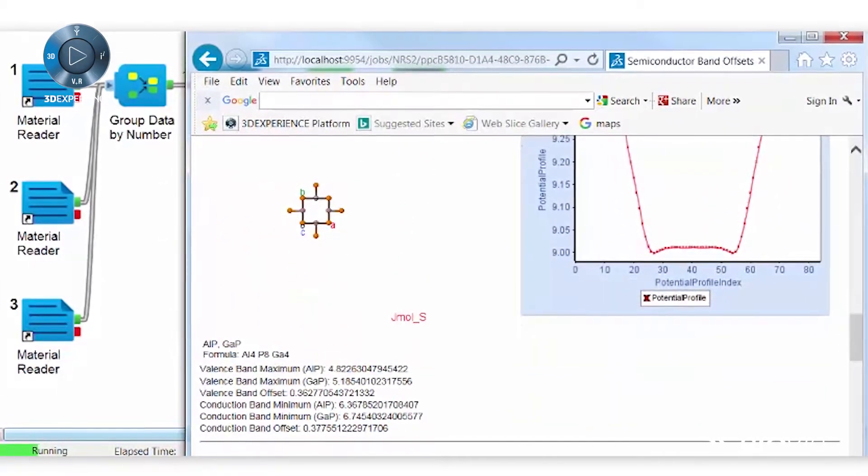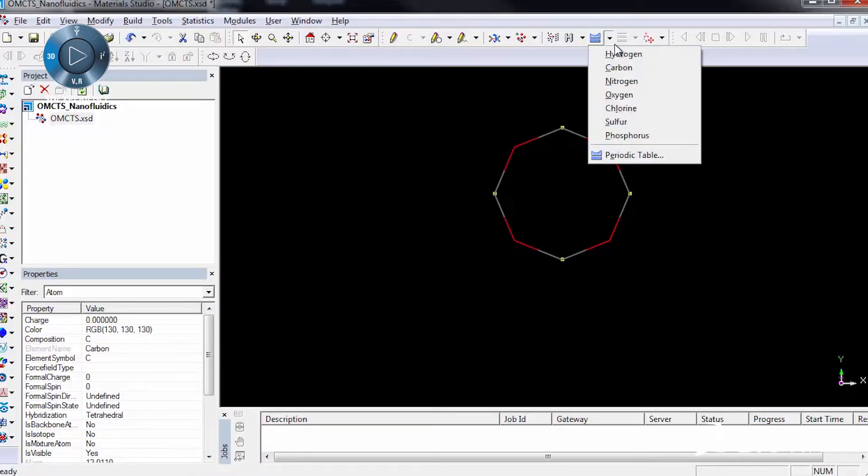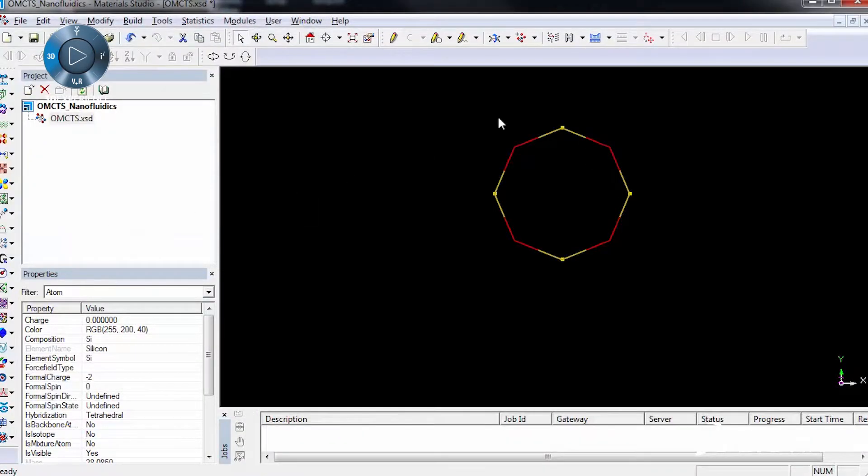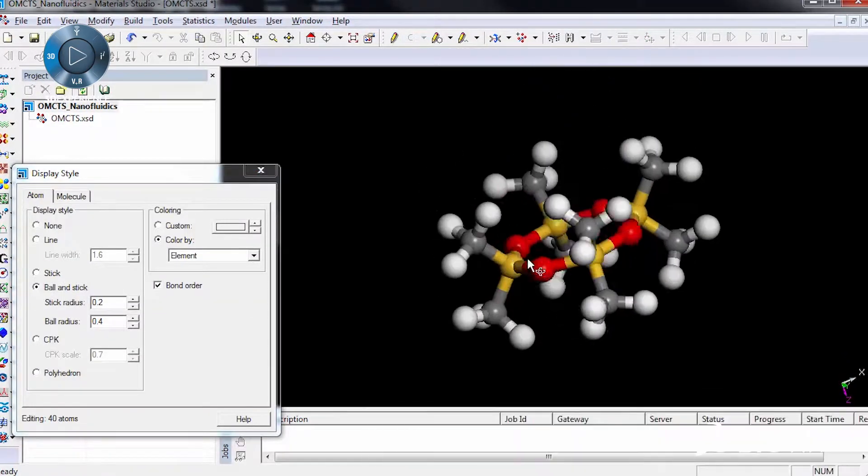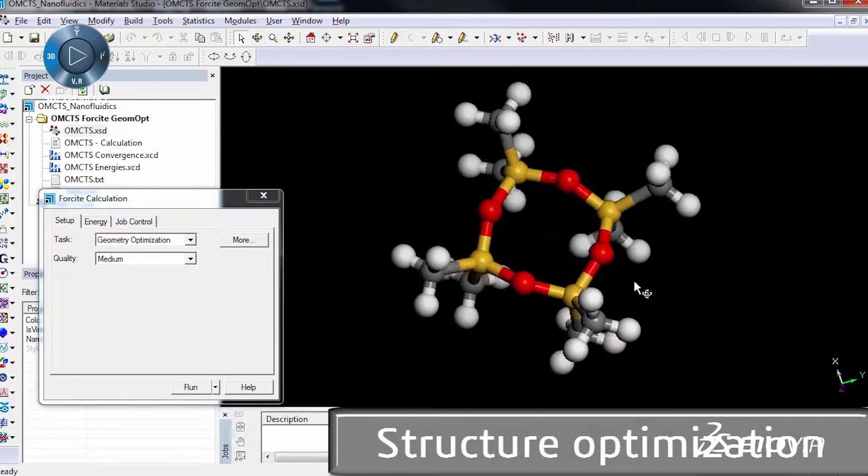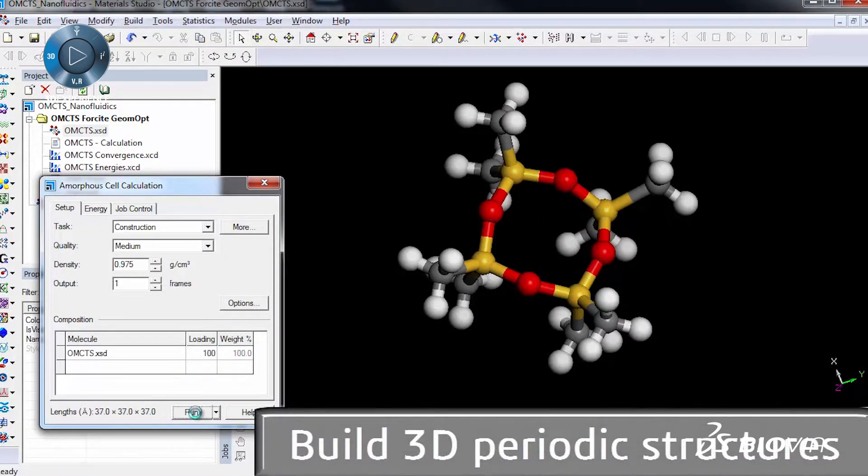By combining Biovia's Pipeline Pilot engine with the simulation capabilities of Materials Studio, powerful simulation methods become available to scientists to easily and rapidly screen new materials for a range of industrial applications and to guide laboratory work on the most promising candidates.